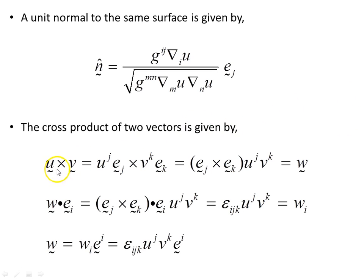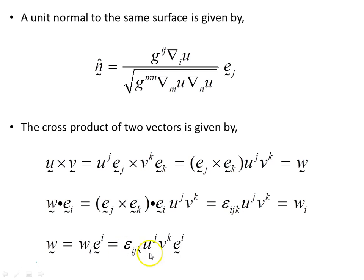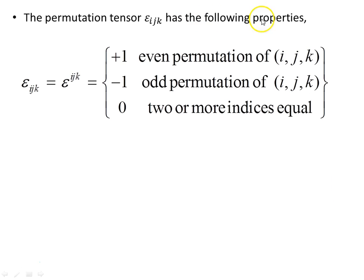The cross product of two vectors u × v gives vector w, with components w^i expressed by factoring out u^j and v^k. Dotting with the covariant basis e_i gives us w_i = ε_ijk u^j v^k, where ε_ijk is the permutation tensor. The vector w can then be written as w_i times the contravariant basis e^i. The permutation tensor has the following properties: +1 for an even permutation of the indices ijk, −1 for an odd permutation, and 0 when two or more indices are equal.